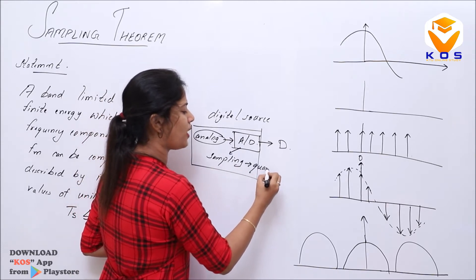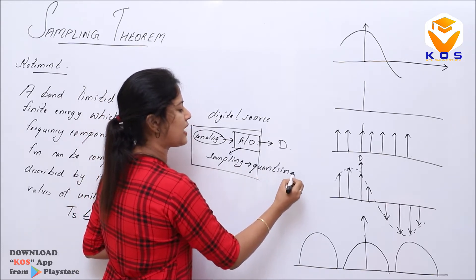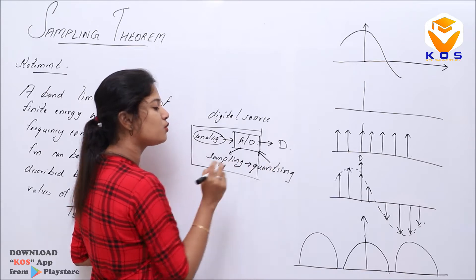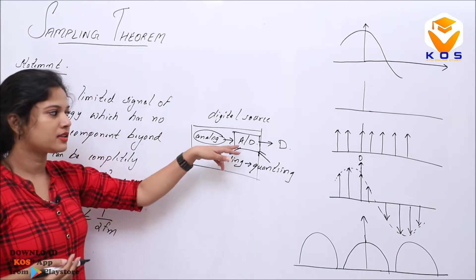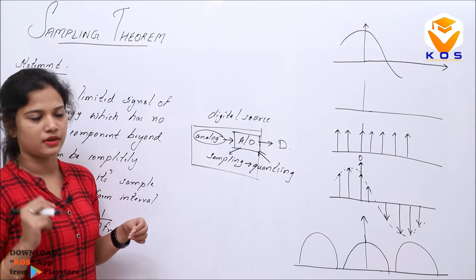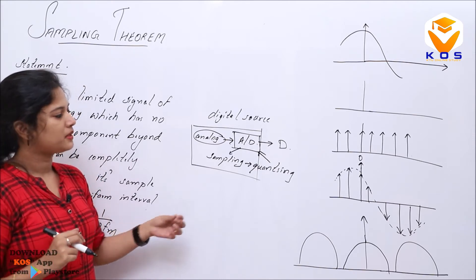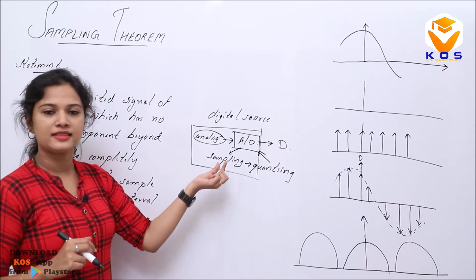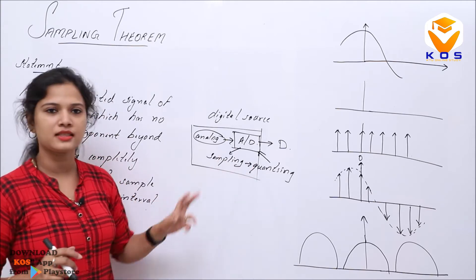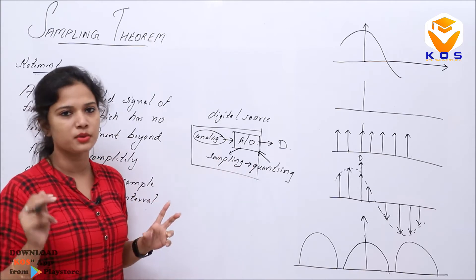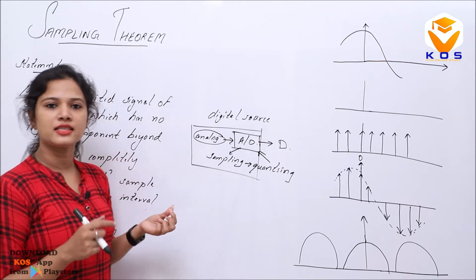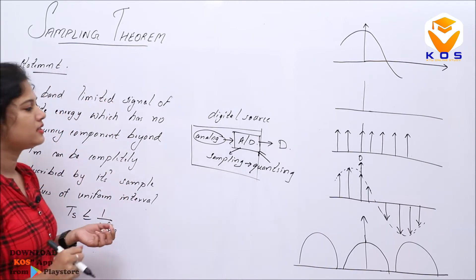There is something called a quantizing process. Sampler and quantizer are the two components which come under the A2D converter. When we learn the sampling process, it is the corresponding sampling process from this circuit.